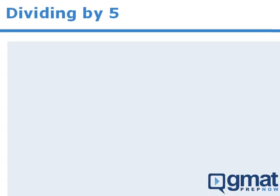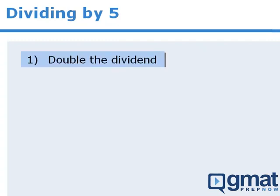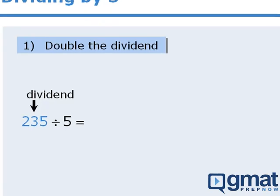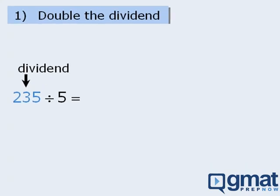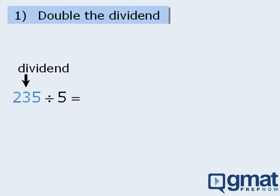Now the technique requires only 2 steps that can be performed in your head. The first step is to take the dividend and double it. Now what's the dividend? That's the part that you are dividing by 5. So here the dividend is 235, since we're dividing 235 by 5. Once you have doubled the dividend, the next step is to take the result and move the decimal place one space to the left.